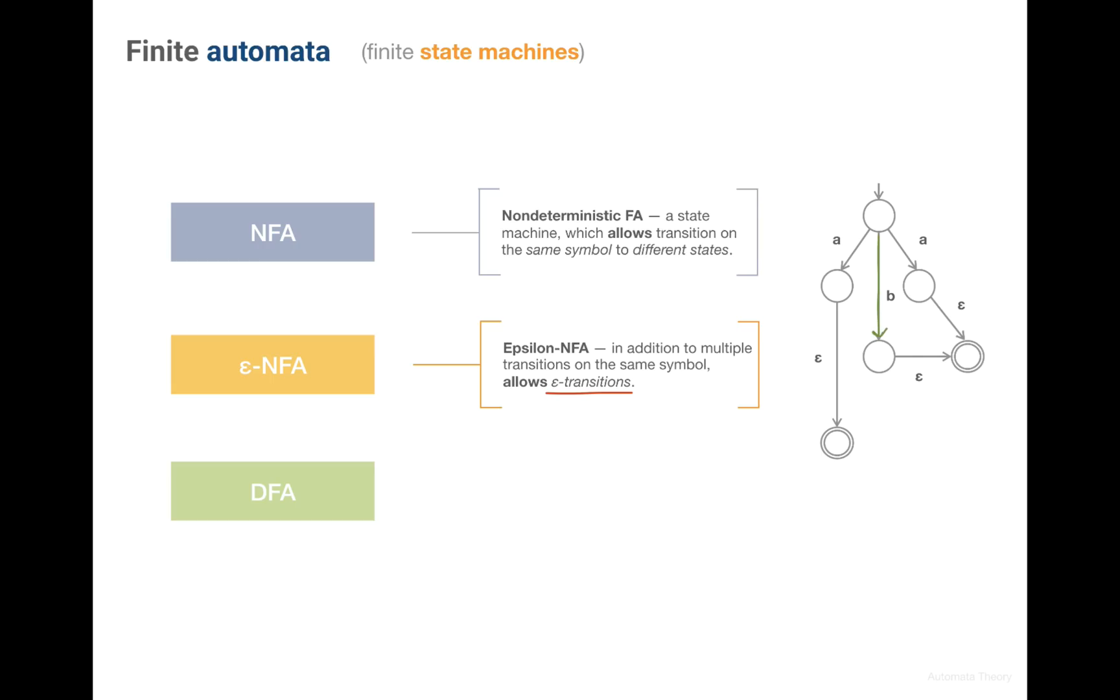In this case we have to consume character B or character A here, but we can transit from state 2 to state 4 without consuming any character.